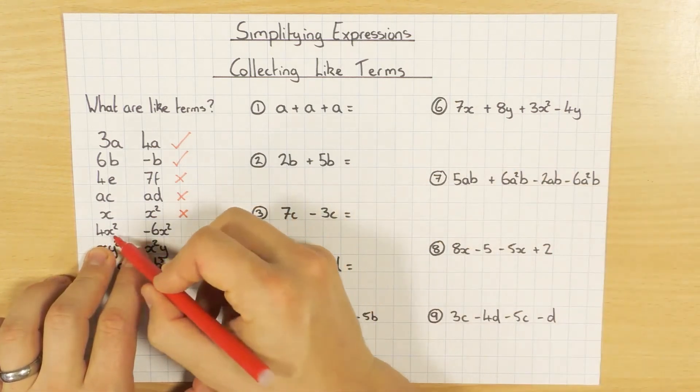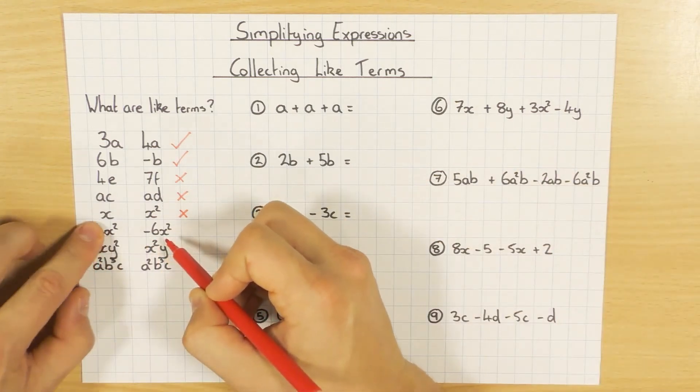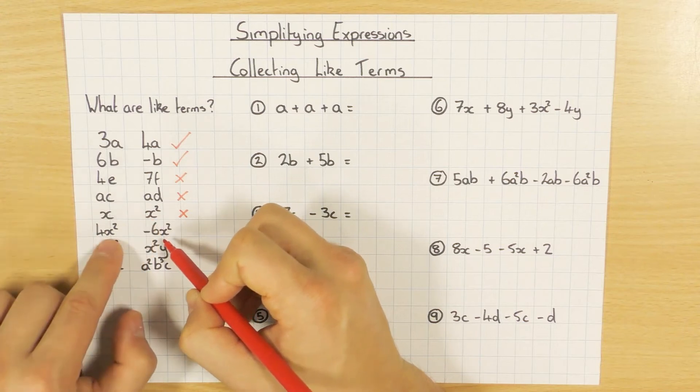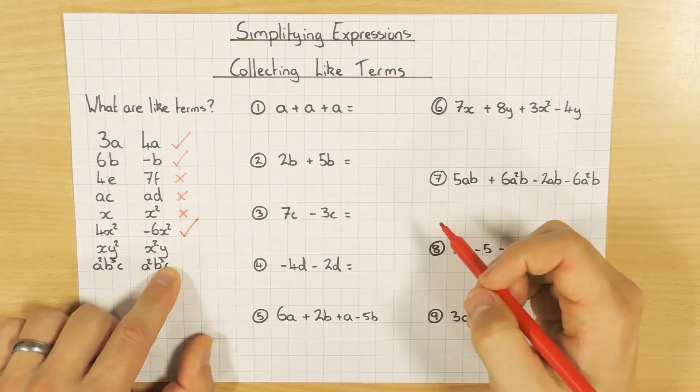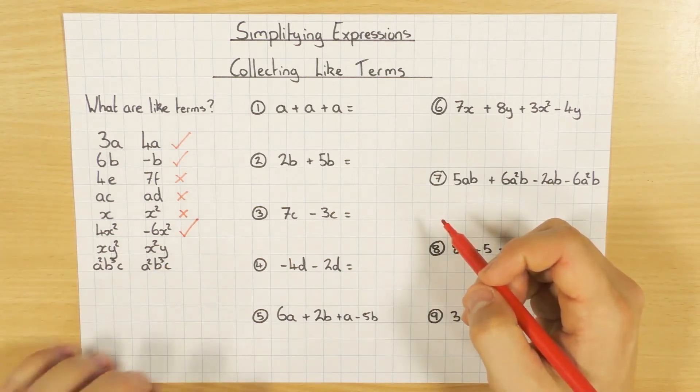However, this one here, 4X squared minus 6X squared. Again, I might ignore the 4 and ignore the minus 6. Just look at the letters. X squared and X squared. So these ones are. So the powers and the letters, or the variables, are exactly the same.